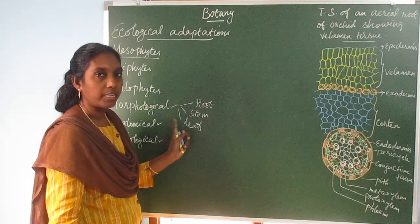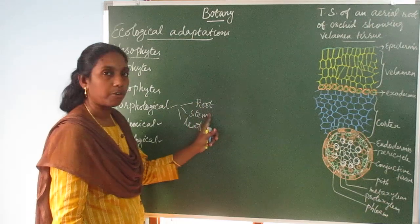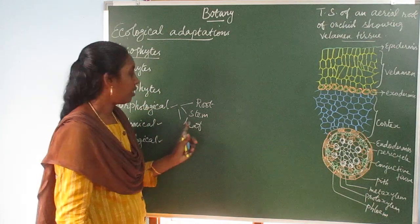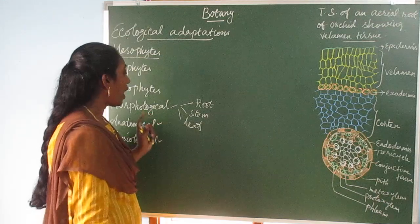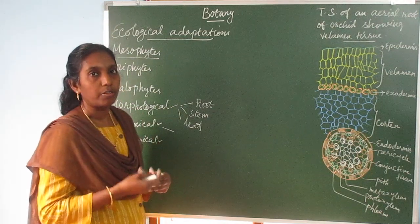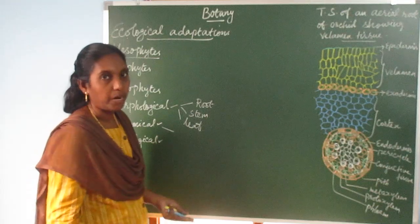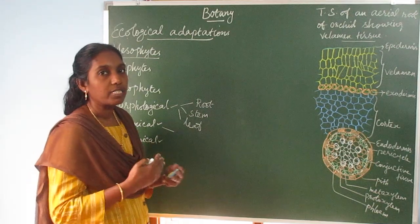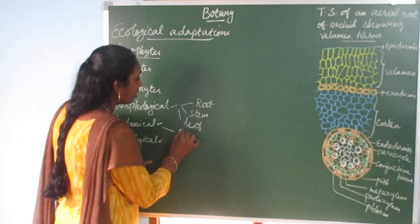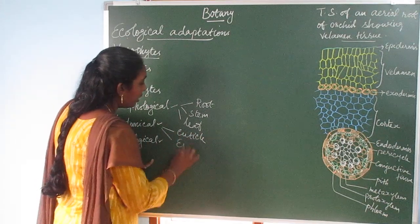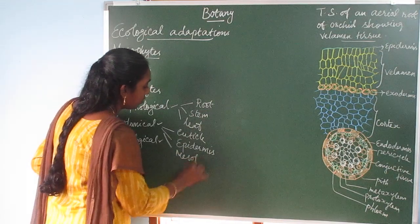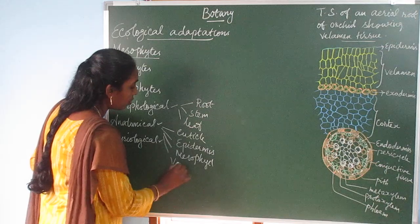Under morphological adaptations, you write about the root system — how the root is adapted to the environmental conditions of that plant — then stem and leaf. For anatomical adaptations, when you take a section and observe it under a microscope, it reveals different parts such as cuticle, epidermis, mesophyll, and vascular tissue.